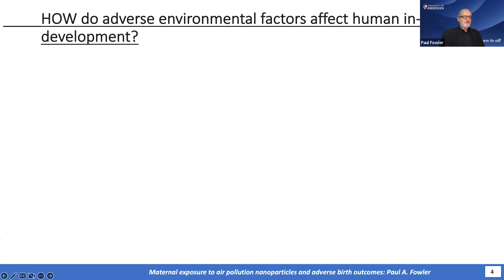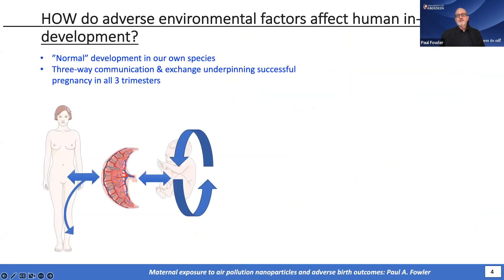One of the questions you ask — and it's really difficult to answer — is how do these environmental conditions affect human development in the womb? Normal development in our own species remains surprisingly badly understood, and there are clear ethical reasons for that. It's complicated. This applies to all mammals — there's a three-way exchange between mother, placenta, and fetus and back again.